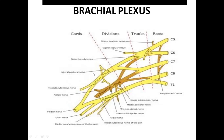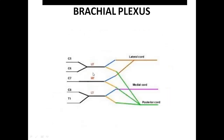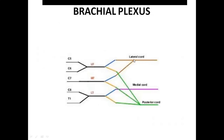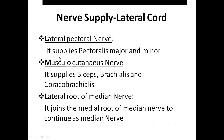Let us see the branches. The branches of the lateral cord — it has got three branches. It consists of the lateral pectoral nerve, musculocutaneous nerve and the lateral root of the medial nerve.